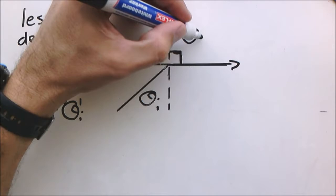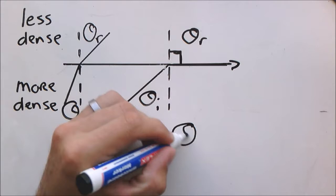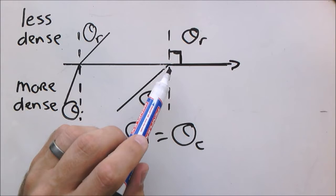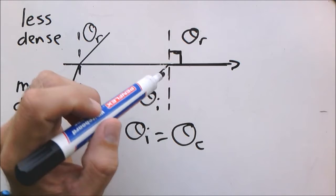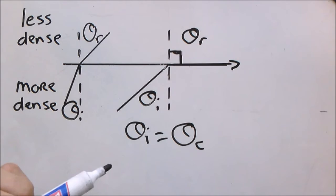The moment that takes place, we call this incident angle the critical angle. So this is the first concept: the critical angle. At the critical angle, the angle of refraction will be 90 degrees. In other words, there's no light exiting the more dense medium — except for a little bit of reflection, which always occurs.